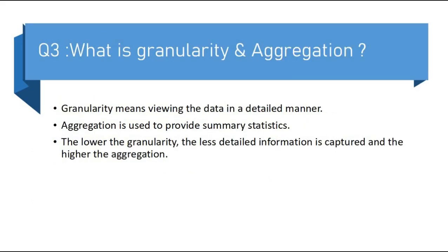The third question is what is granularity and aggregation. Granularity means bringing the data in a detailed manner and aggregation is used to provide the summary statistics. Granularity and aggregation are opposite to each other. Lower the granularity, higher the aggregation, and higher the granularity, lower the aggregation.